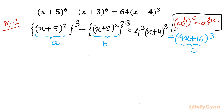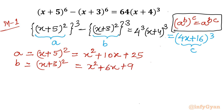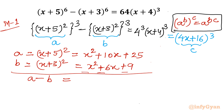Now I will write both a and b values separately. a = (x+5)² = x² + 10x + 25. Similarly b = (x+3)² = x² + 6x + 9. Now I will find the value of a minus b. Subtracting: 10x minus 6x is 4x, and 25 minus 9 is 16. So a minus b equals 4x + 16, which is equal to c.